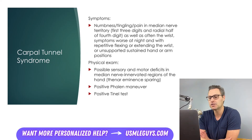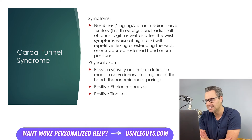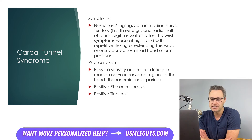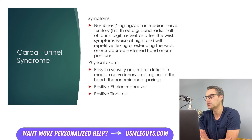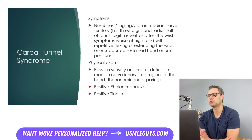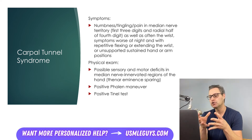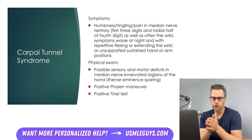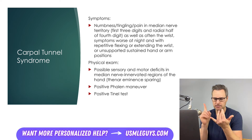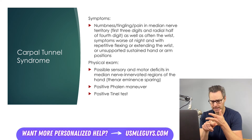Next, a very commonly tested condition: carpal tunnel syndrome. This occurs when the median nerve is compressed as it travels through the wrist, causing pain, numbness, and tingling in the areas innervated by the median nerve — including the first three digits and the radial half of the fourth digit. The patient may also experience symptoms in the wrist. Symptoms can be worsened at night and with tasks causing repetitive flexing or extension of the wrist, or when the hand or arm is held in an unsupported sustained position for a long time.